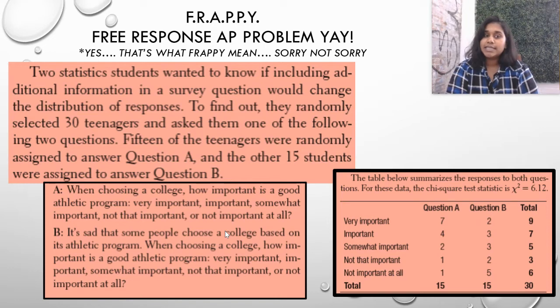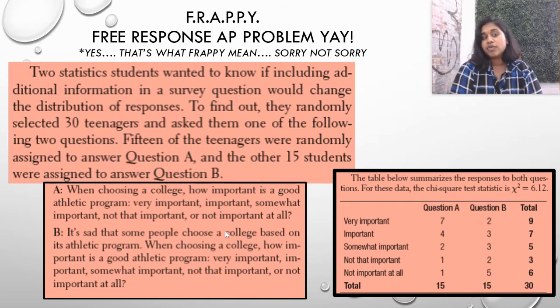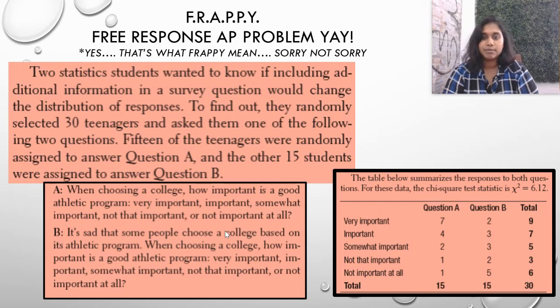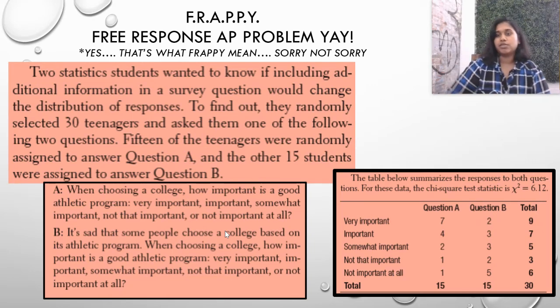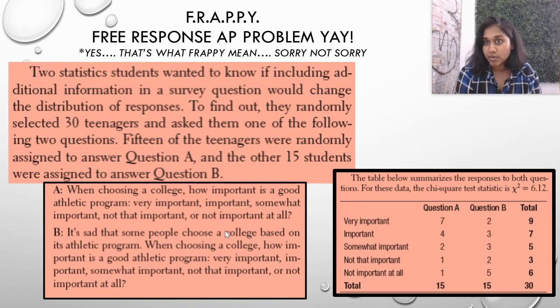Question B, however, gives this first sentence: It's sad that some people choose a college based on its athletic program. When choosing a college, how important is a good athletic program? So there's no difference from A to B on the second sentence, but that very first sentence is important, right? They wanted to know if including that additional biased bit of information would change the distribution of responses. So they summarized the data here, and they already figured out the chi-square test statistic was chi-squared equals 6.12.